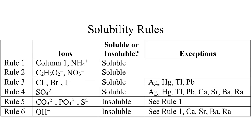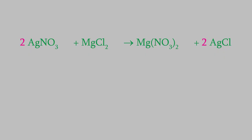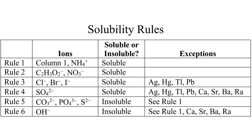Those six solubility rules cover tens of thousands of different compounds, including all the compounds that we'll work with in this course. So now let's use those rules. Here's the chemical reaction that we've been looking at. I told you that both of the reactants are soluble, and we can see that using the solubility rules. The first compound is silver-1-nitrate, and rule two tells us that all nitrates are soluble.